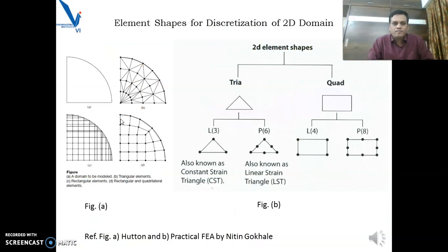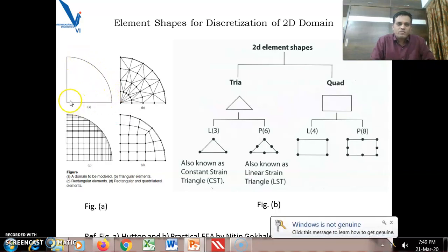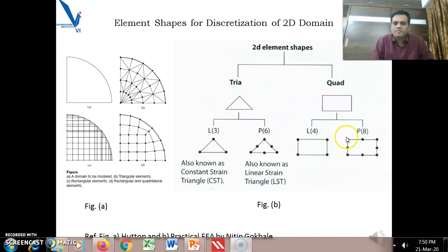Any 2D problem under those assumptions can be analyzed using either plane stress or plane strain theory. To analyze this domain using the 2D approach, we generally use two types of element shapes for discretizing the domain: either a triangular element or a quadrilateral element. Common popular shapes are the three-node triangular element, the six-node triangular element, the four-node rectangular element, and the eight-node rectangular element. There is also a nine-node rectangular element where the node is at the center. You can use triangular, quadrilateral, or even a combination to discretize the 2D domain.